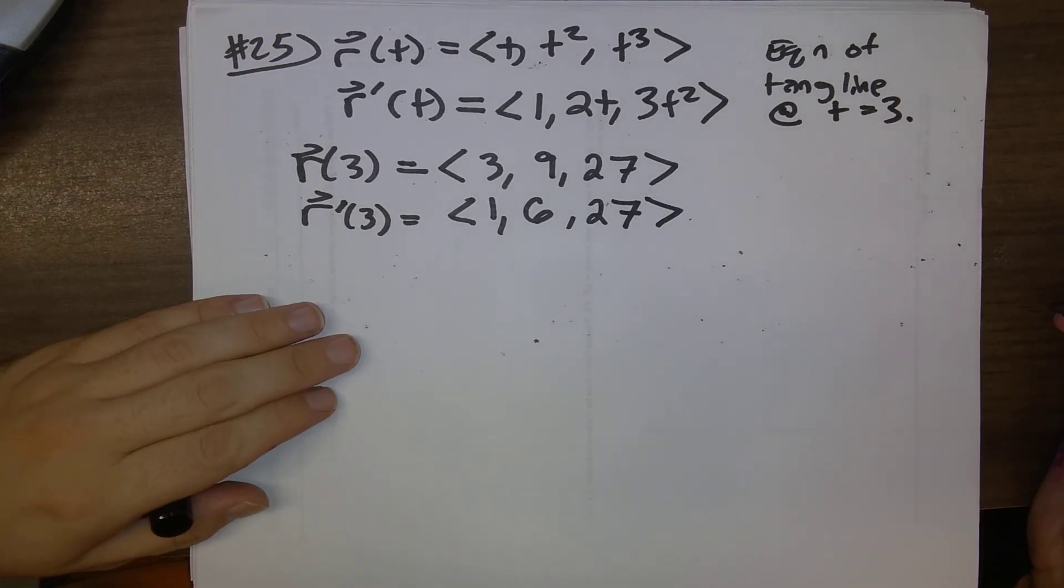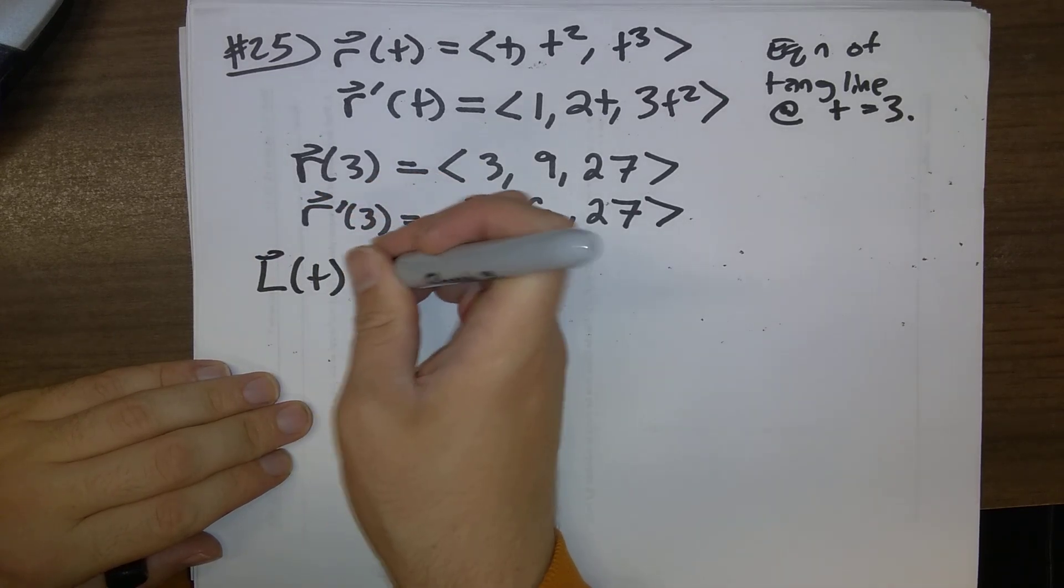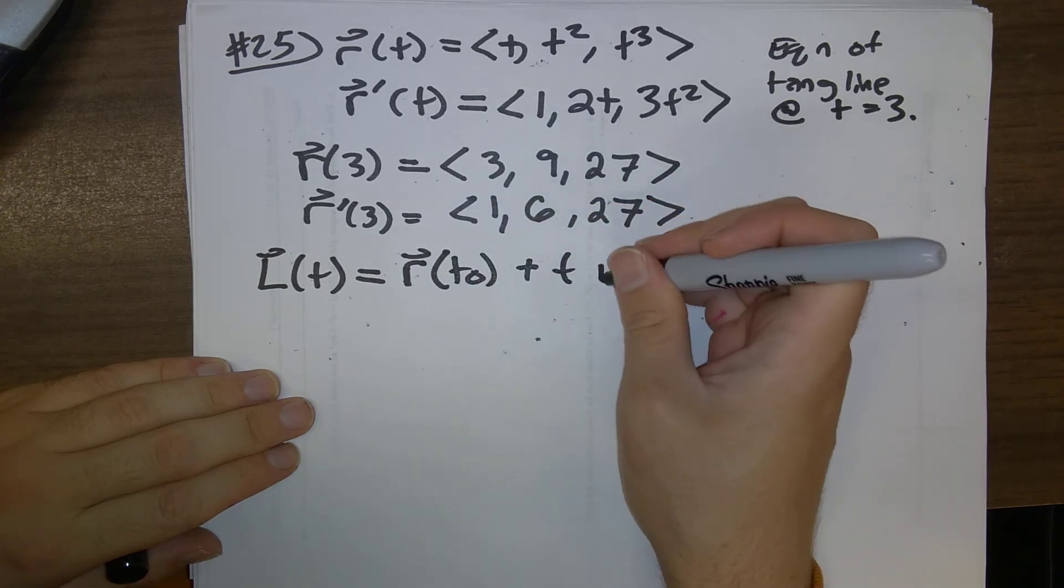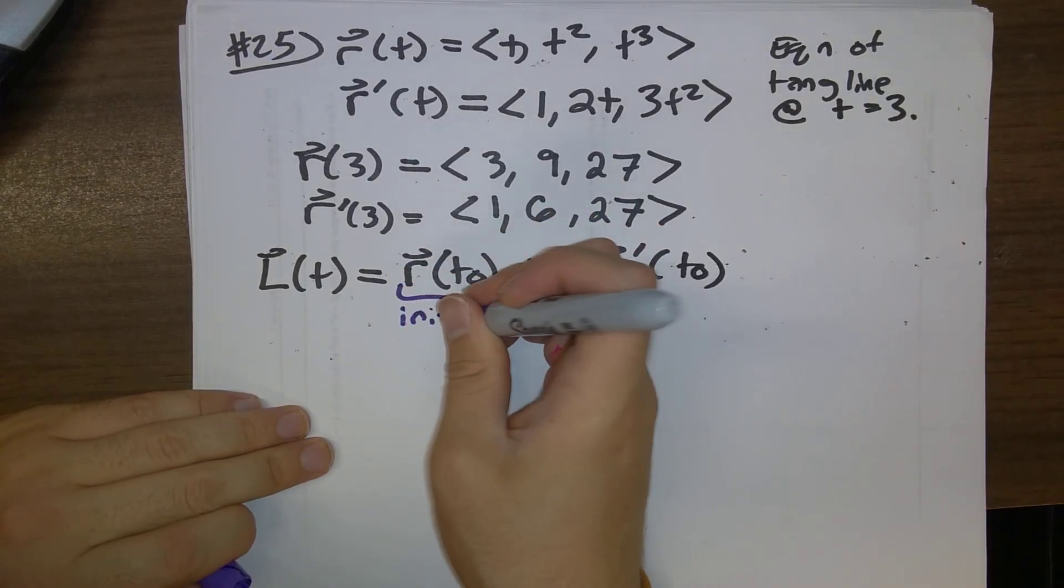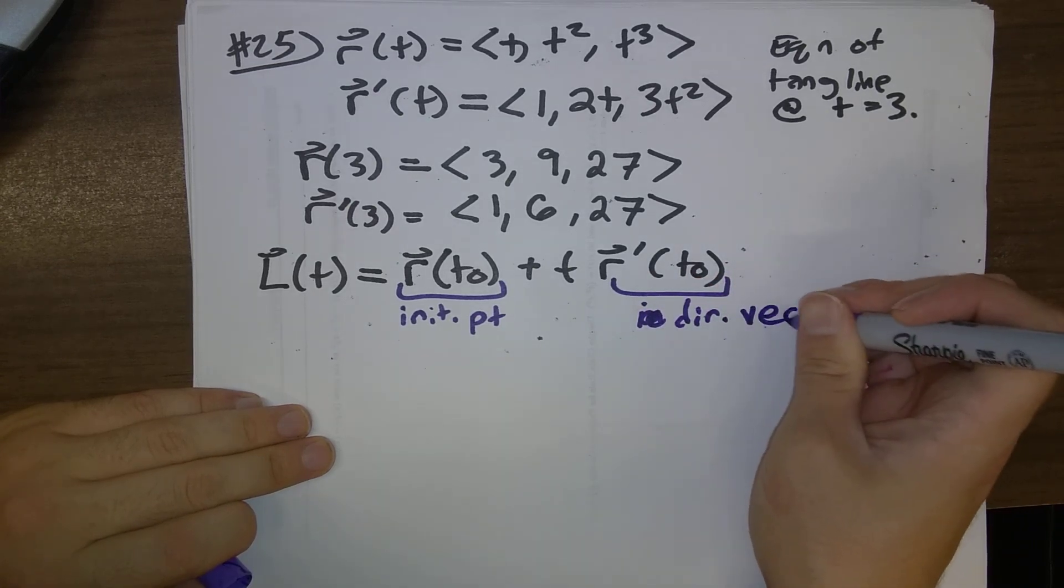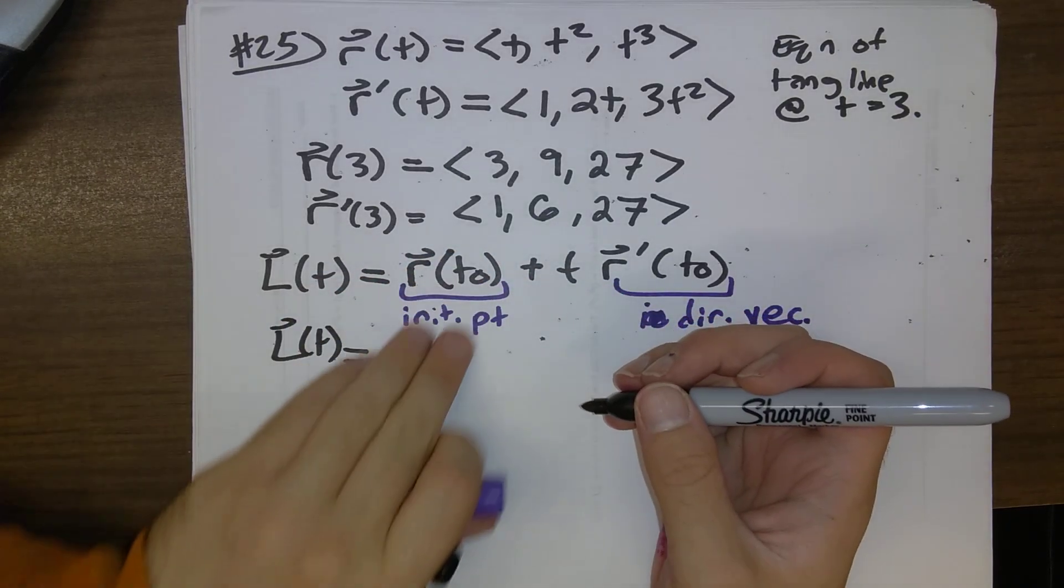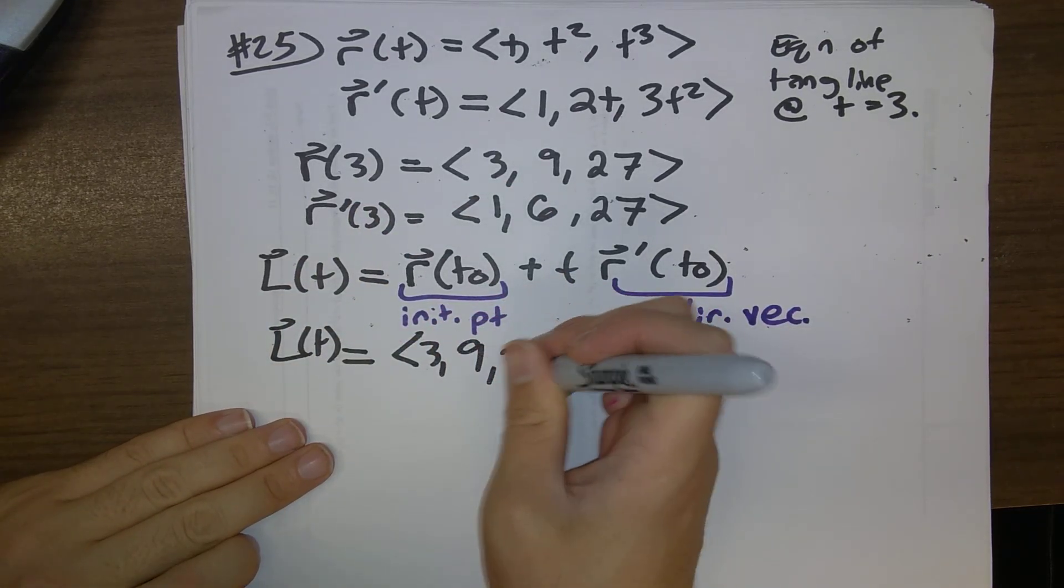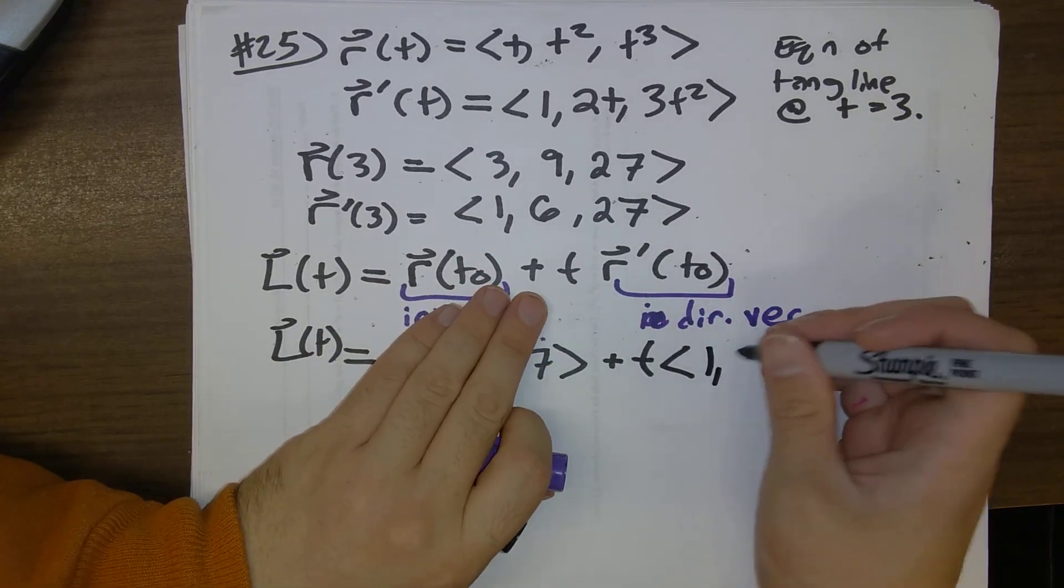Our general equation of a tangent line, l of t is r of t naught plus t times r prime of t naught. Here, this is the initial point, and r prime of t gives us our direction vector. So, what do we have here? l of t is r of t naught, r of 3 is 3, 9, 27 plus t times r prime of 3, 1, 6, 27.